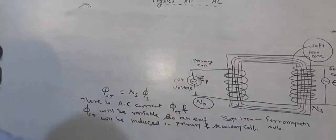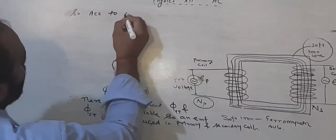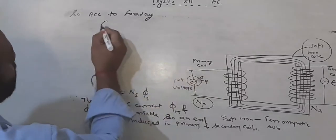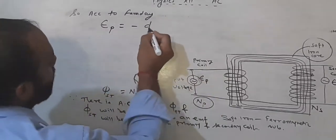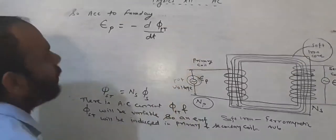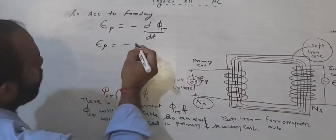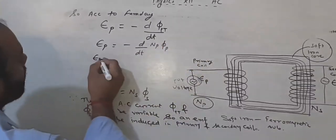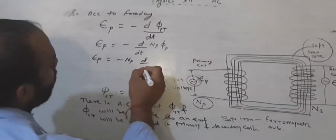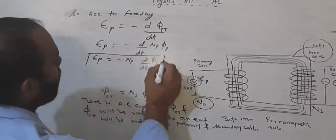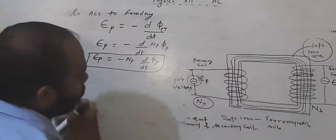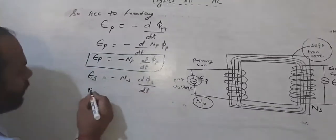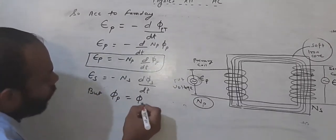According to Faraday's law, EP equals minus d(phi_PT)/dt, which equals minus NP times d(phi_P)/dt. This gives us equation one. Similarly, ES equals minus NS times d(phi_S)/dt. But we established that d(phi_P) equals d(phi_S). So from equations one, two, and three, we can derive the relationship.